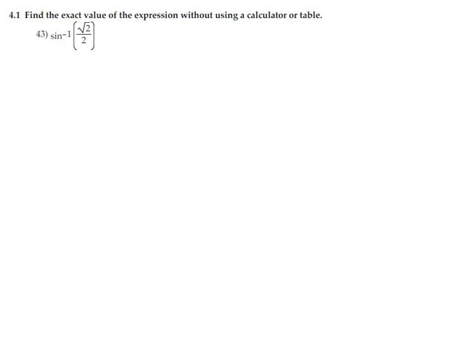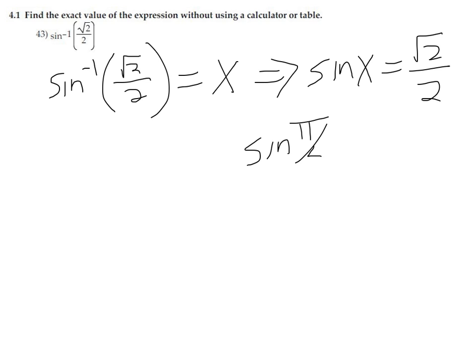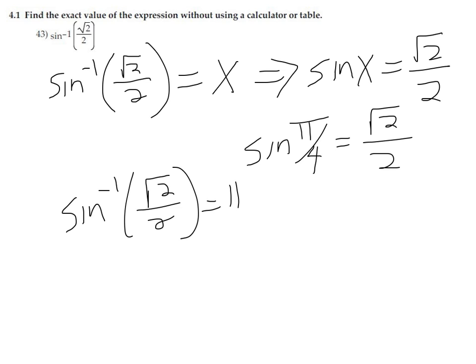The key here is if arcsine of square root of 2 over 2 equals x, then that's almost the same as sine x equals square root of 2 over 2. So where does sine equal square root of 2 over 2? I know that sine of pi fourths equals square root of 2 over 2. So therefore, arcsine of square root of 2 over 2 is pi fourths.